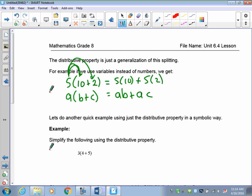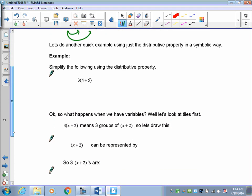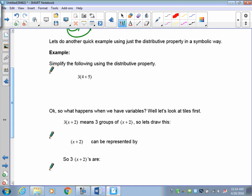Okay? So it's A times B and A times C. So let's do another quick example using the distributive property. I think I'm saying that's a distributive property in a symbolic way. So we're getting rid of the tiles.